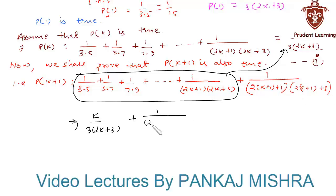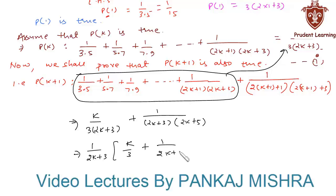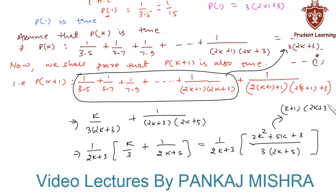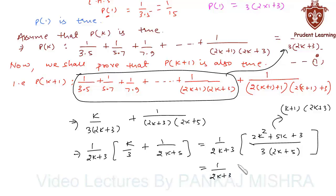Taking 1/(2k+3) as common, we get 1/(2k+3) × [k/3 + 1/(2k+5)]. Taking 3(2k+5) as LCM gives (2k²+5k+3) in the numerator. Factorizing this polynomial gives factors (k+1) and (2k+3), so we write 1/(2k+3) × [(k+1)(2k+3)] / [3(2k+5)].